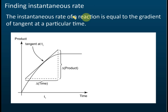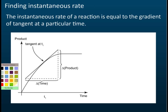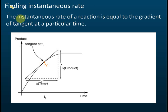The instantaneous rate is equal to the gradient of the tangent at a particular time. For example, let's say we have a curve — products against time — and if you are asked to find the rate of reaction at this instant, what you do is draw a tangent at that point.